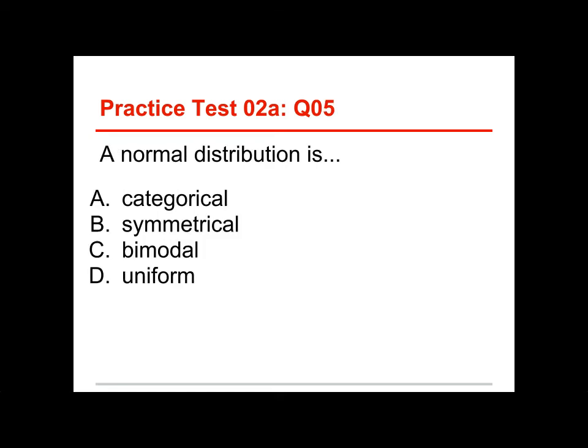The last question: a normal distribution is categorical, symmetrical, bimodal, or uniform? The answer is symmetrical, meaning it's the same on both sides. A bell curve is a mirror image—it's tall in the middle and tapers out on both sides.